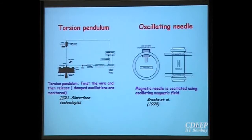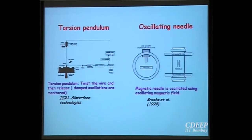Interfacial rheology is complicated because bulk rheology also affects measurements. One instrument where bulk rheology can be almost eliminated is the oscillating needle rheometer — a very fine needle is kept at the interface and magnetically oscillated. This is a newly developed rheometer now available on the market.